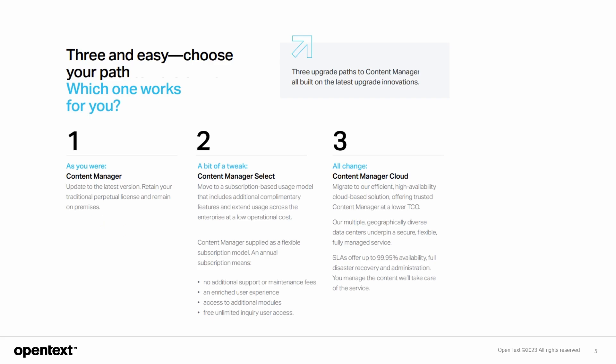So let's say that you've made the decision to upgrade. What does that upgrade path look like for you? Well, it depends on what suits you. Are you happy as you are? In that case, just choose path 1 and simply upgrade to the latest version 23.4. Would you like a bit of a tweak? Then you can go for option 2 and move to our subscription package. This may suit you better and it comes with free users, volume, and modules — so you'd still be upgrading to 23.4, but just changing to a subscription model.